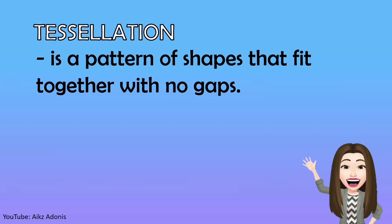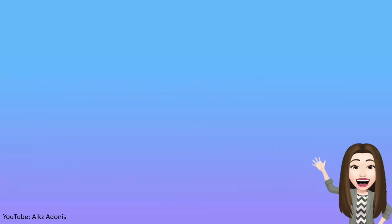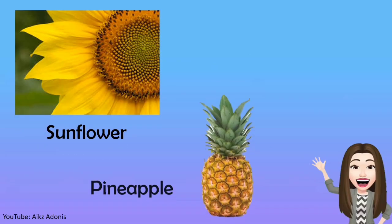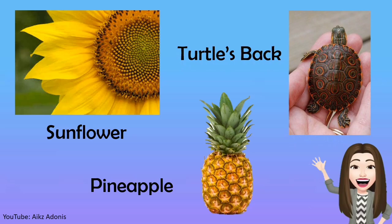Another pattern in nature that you will see is tessellations. Tessellation is a pattern of shapes that fit together with no gaps. For example, a honeycomb — the hexagonal prismatic wax cells built by honeybees in their nests to contain their larvae and store honey and pollen — is a repeated pattern. Tessellations are also seen in sunflowers, pineapples, turtle's backs, and many more.